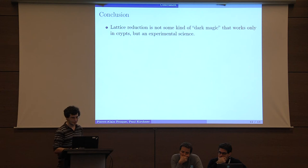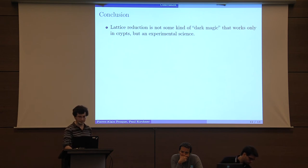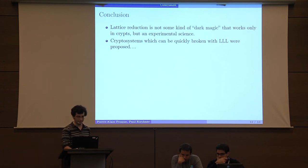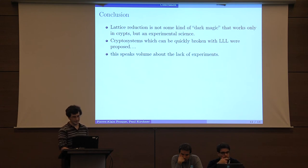In conclusion, lattice reduction is not some kind of dark magic that works only in crypts, but an experimental science. Cryptosystems which can be quickly broken with LLL were proposed. There was one example of a homomorphic encryption scheme—the proposed computation took around one day, and we took also around one day to compute the secret key. This speaks volumes about the lack of experiments made in this area, I think.